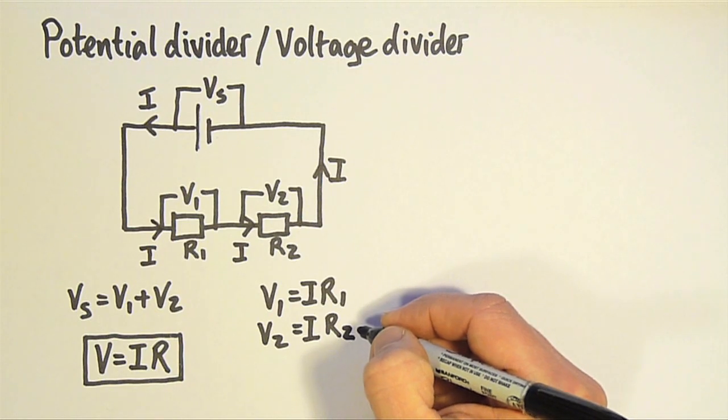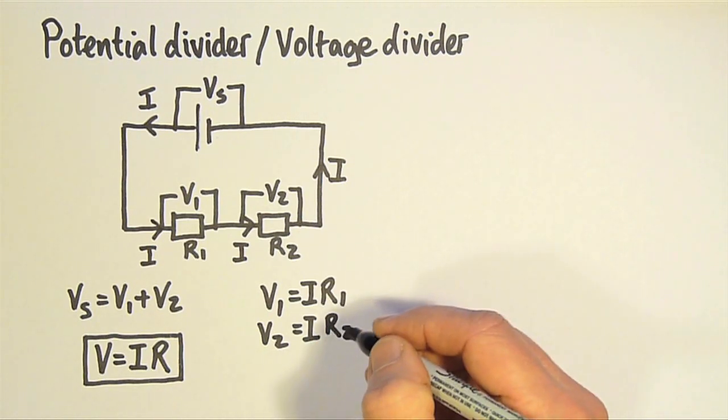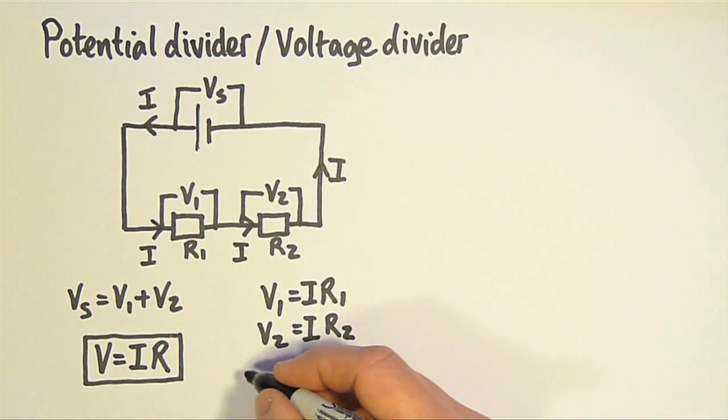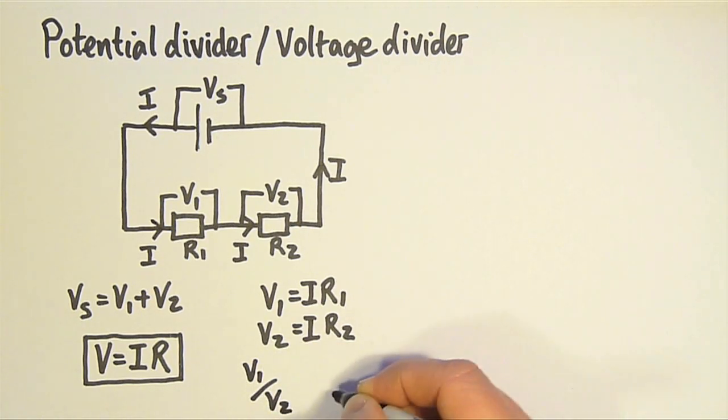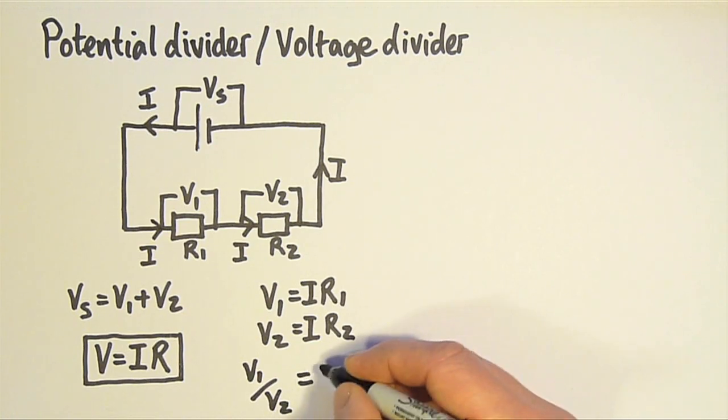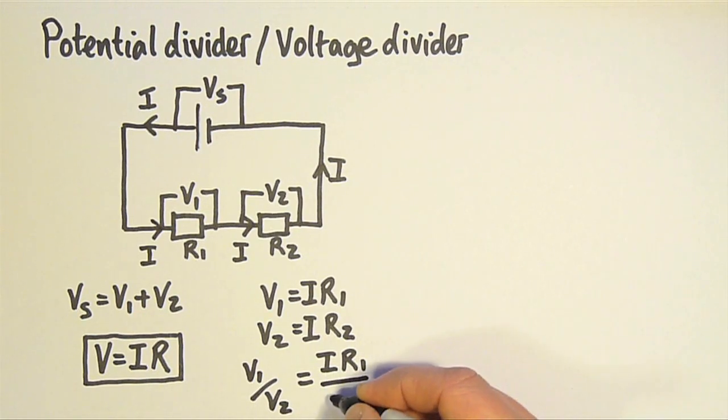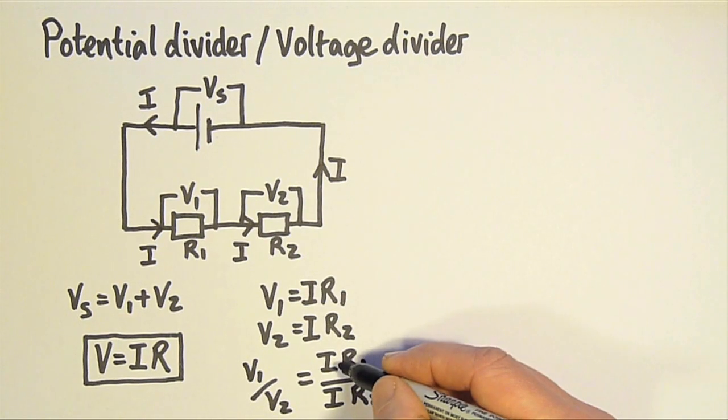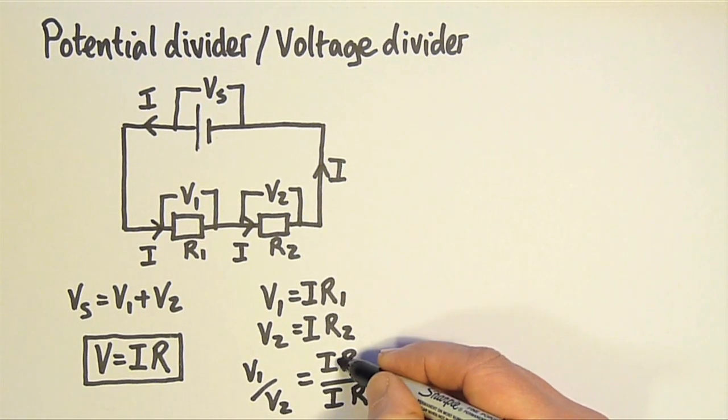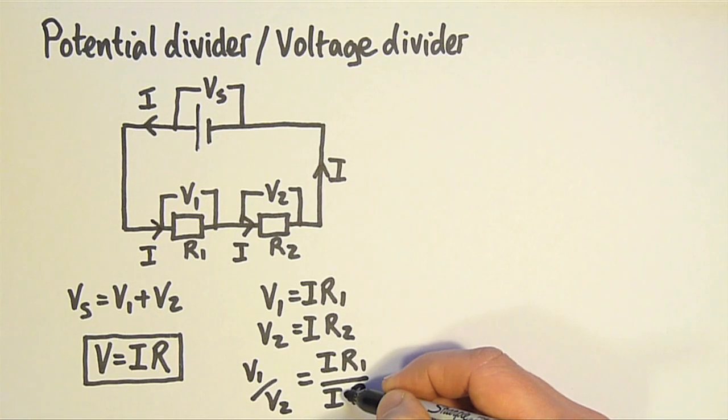With potential divider circuits, we're interested in the ratio of the voltages. V1 divided by V2. V1 is equal to I times R1, and V2 is I times R2. You can see both top and bottom, we're multiplying by I. So we can cancel the I's.